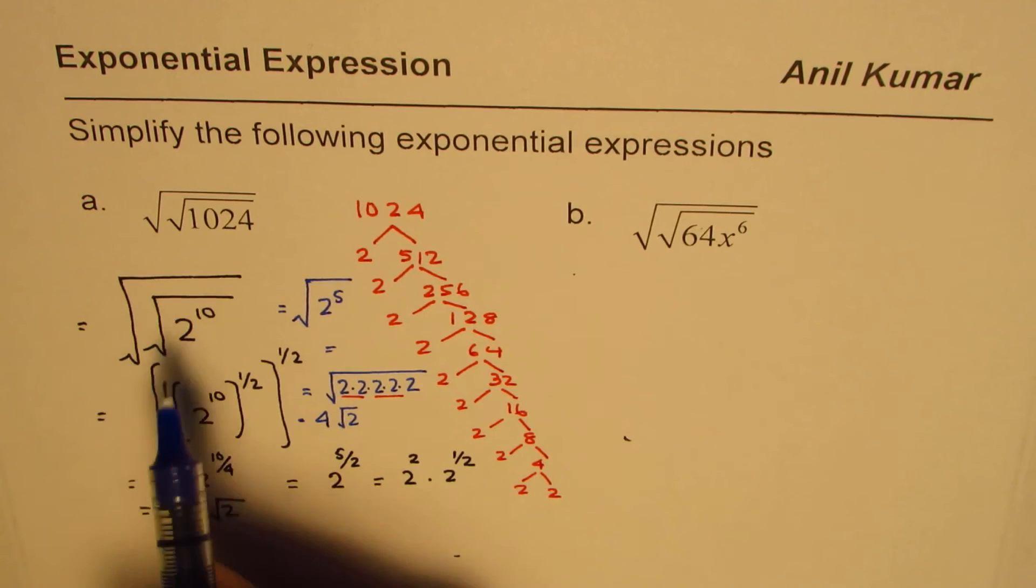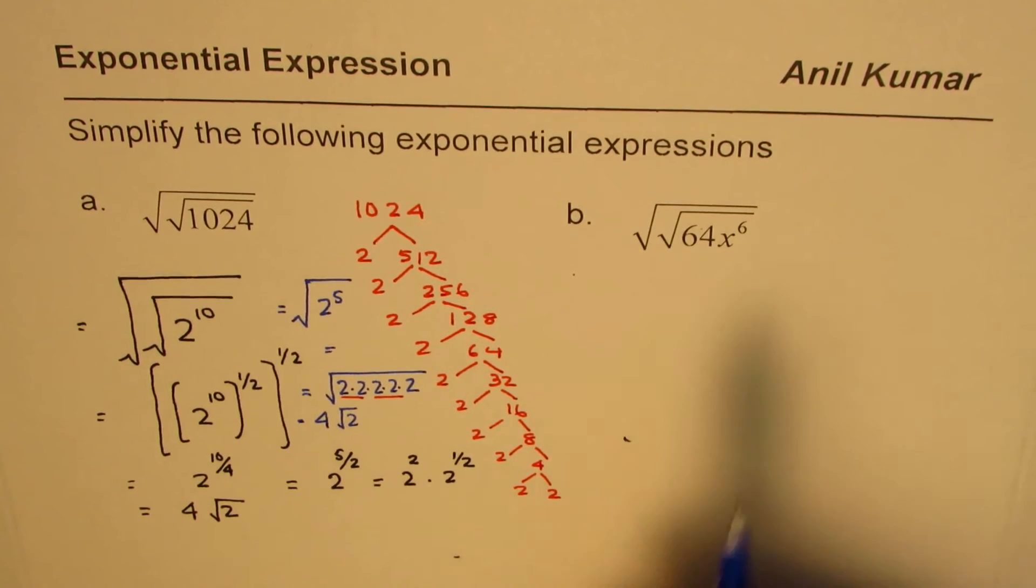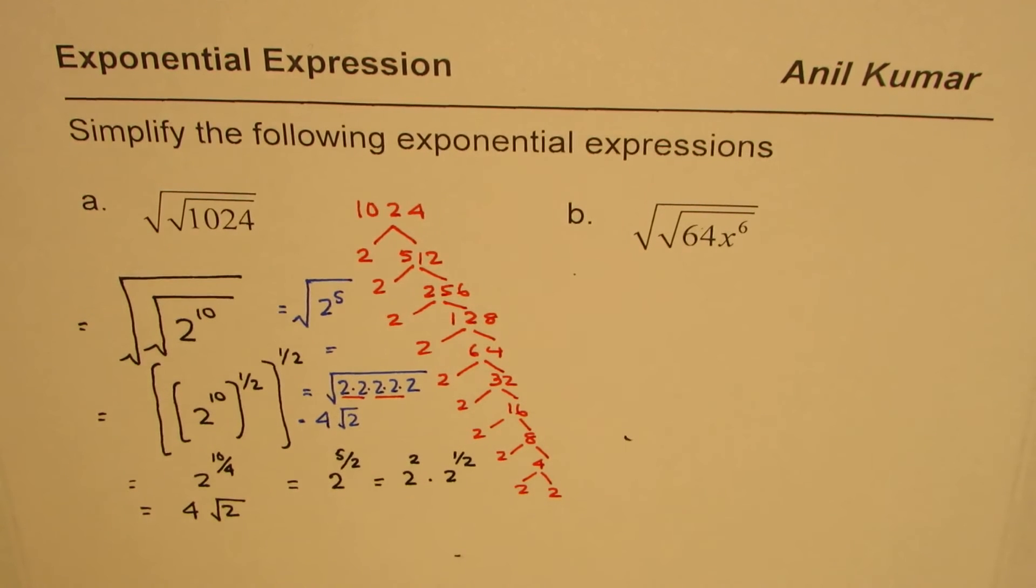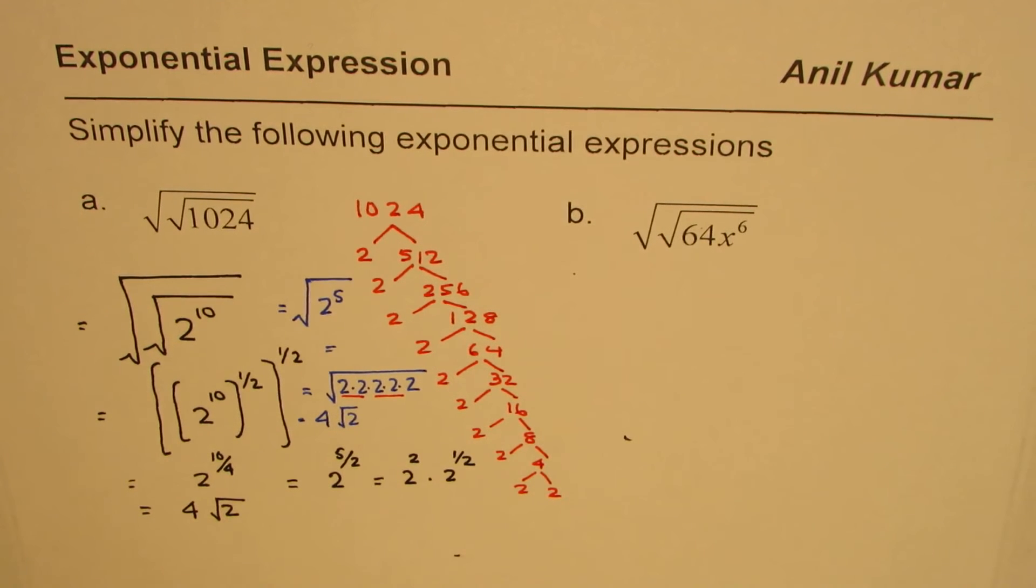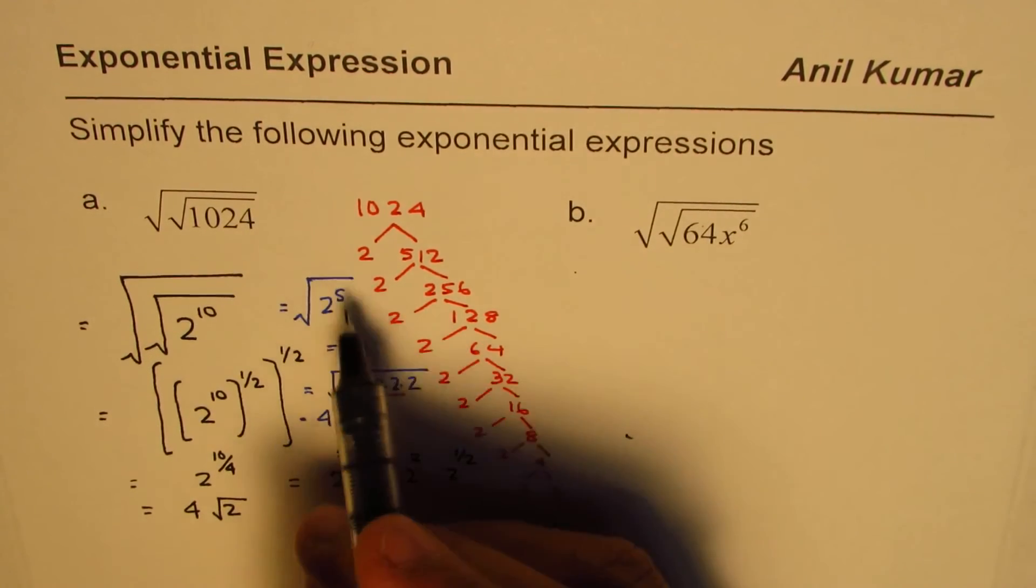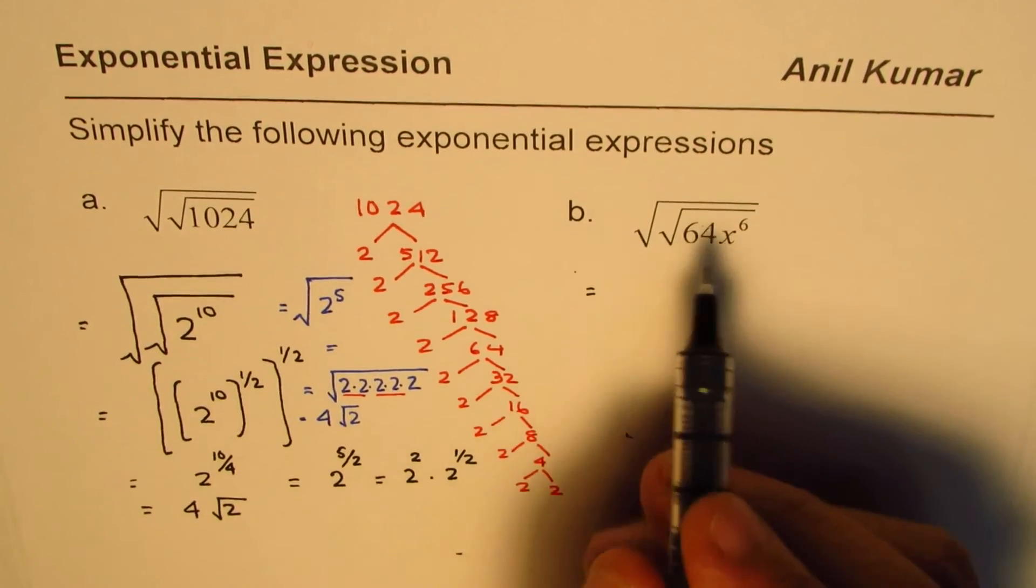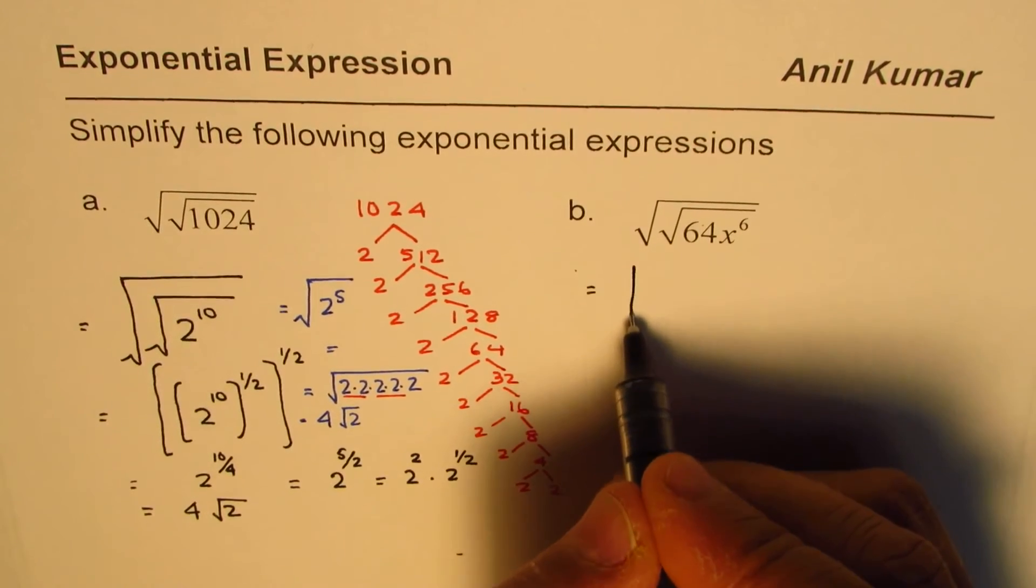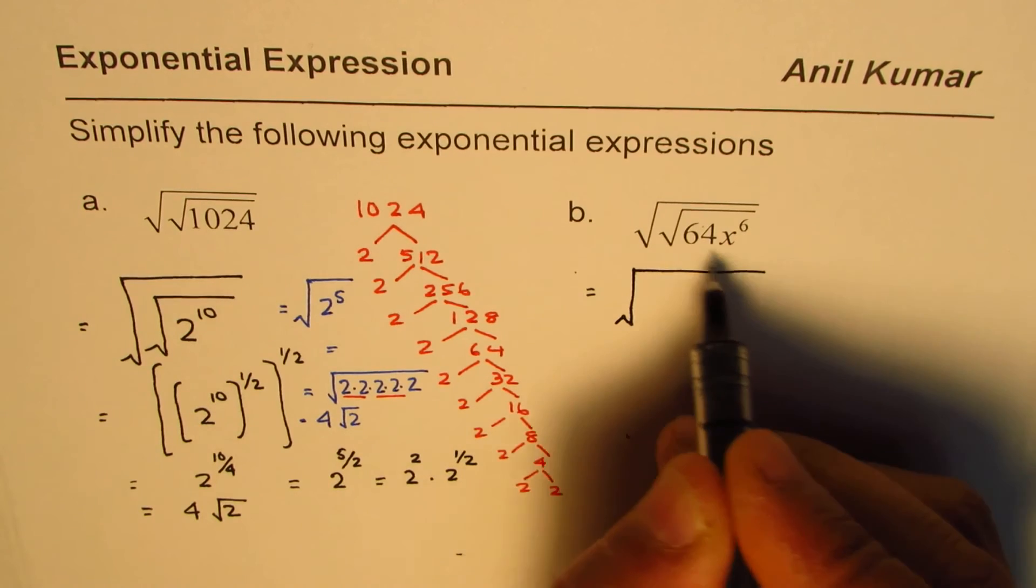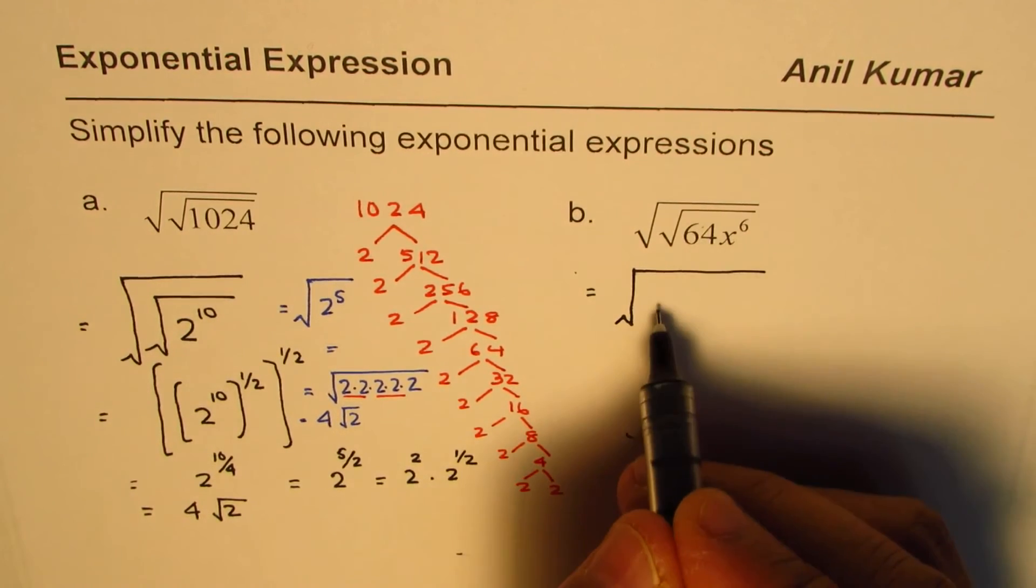Here is the second question for you. You can apply any of these methods which you like and then solve this question. Let me do it the second way. I find this to be simpler rather than applying these power rules. For 64, I'm maintaining the outside square root and I'll solve the inside one. What is square root of 64? It is 8, right?